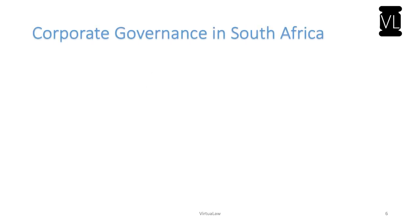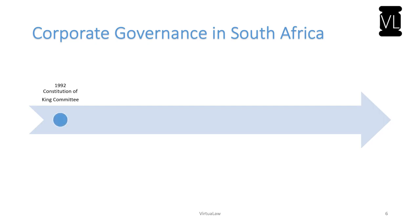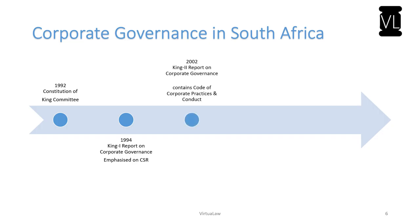The evolution of corporate governance in South Africa started in 1992 when Mervyn King, a Supreme Court judge, chaired a committee named after him — the King Committee — constituted in 1992. This committee produced a report on corporate governance that emphasized the need for corporate social responsibility, wanting companies to be responsible to the societies in which they operate. In 2002, after a span of eight years, they produced a second report containing a code of corporate practices and conduct reflecting seven characteristics of good corporate governance: discipline, transparency, independence, accountability, responsibility, fairness, and social responsibility.